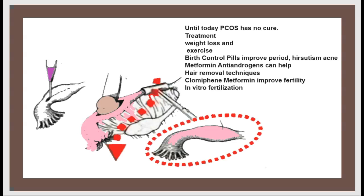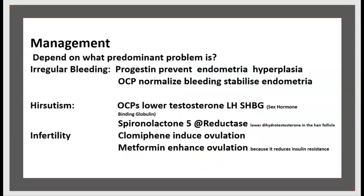Until today, PCOS has no cure. Treatment options include weight loss and exercise, birth control pills to improve periods, hirsutism, and acne, metformin, anti-androgens, hair removal techniques, and clomiphene or metformin to improve fertility. In vitro fertilization is also an option.